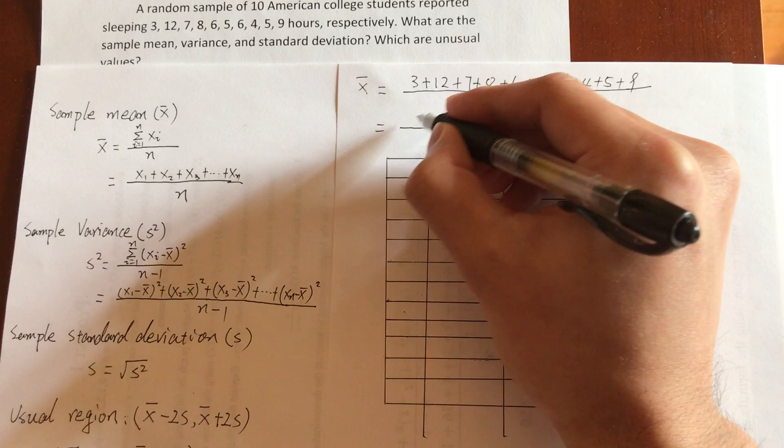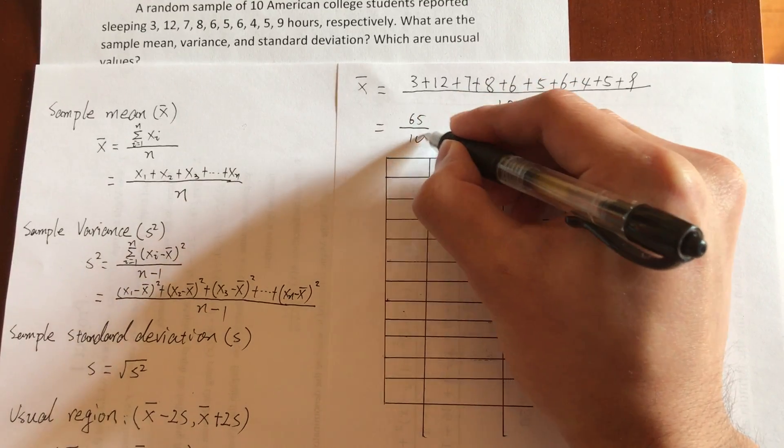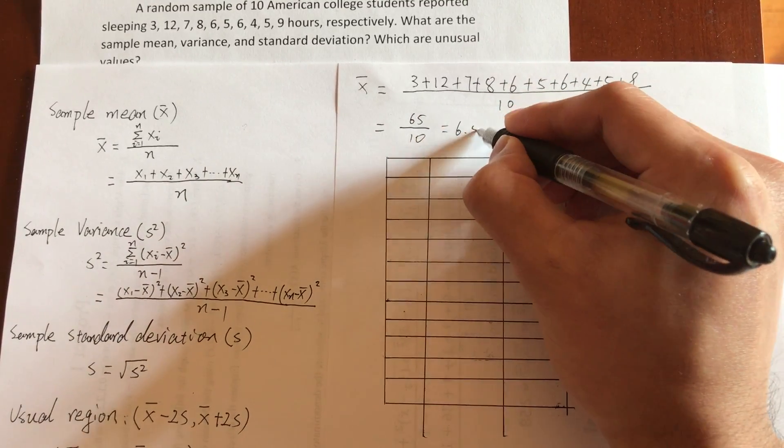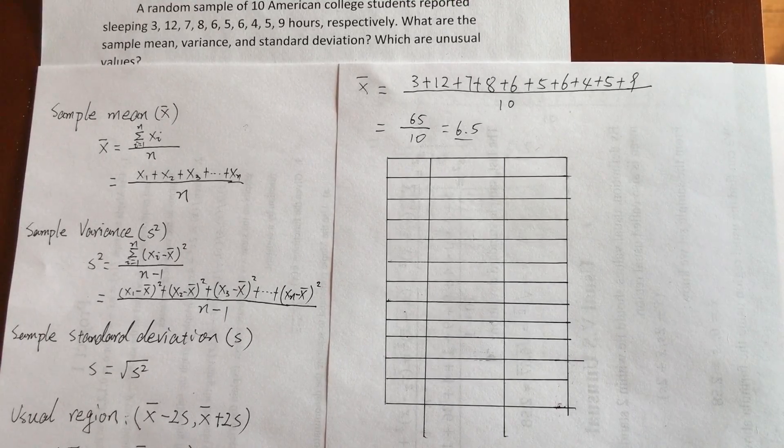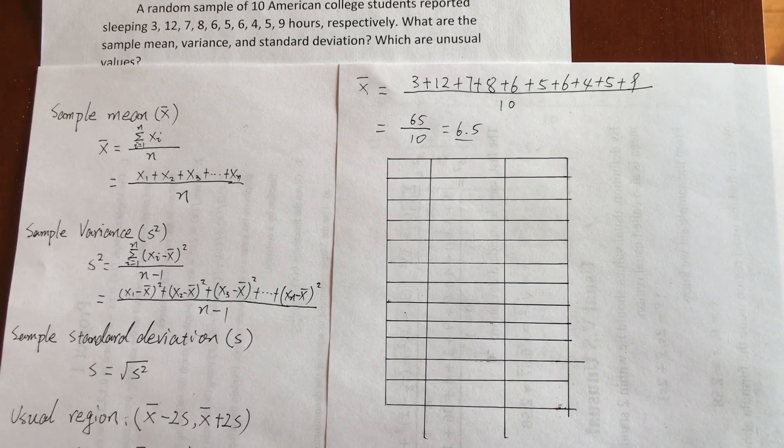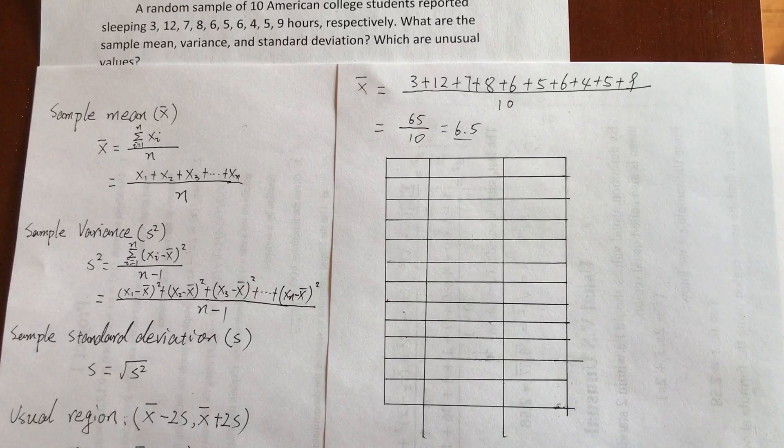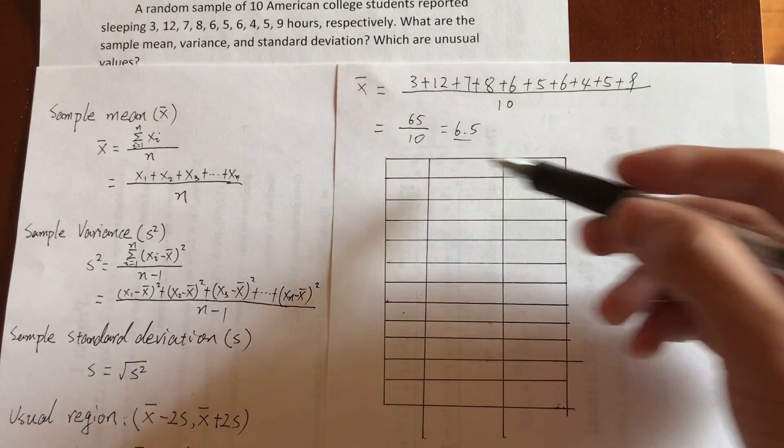Add them up, you get 65. Sample mean is 6.5. Now for variance, you need to create this table like that.